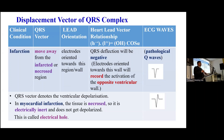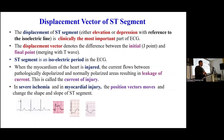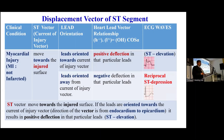In infarction, the QRS denotes ventricular depolarization. In myocardial infarction, the tissue undergoes necrosis and is electrically inert — it does not get depolarized. The QRS vector will move away from the infarcted or necrotic region. Applying the H·L = OH·cosα hypothesis, we can explain this. The ST segment is the most important part of ECG and is an isoelectric period. When the myocardium is injured, it results in leakage of current, called the current of injury. In severe ischemia and myocardial injury, the ST segment changes. The ST vector moves towards the injured surface; leads oriented towards the injured surface show ST elevation (positive deflection), and leads oriented away from the current of injury show negative or reciprocal deflection.